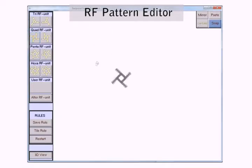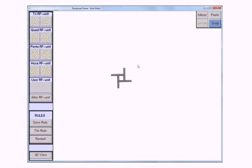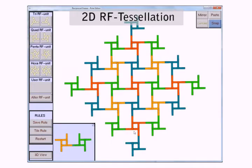First, we start with an RF pattern editor, pick two RF units, and make a rule. We apply it to create an RF tessellation.